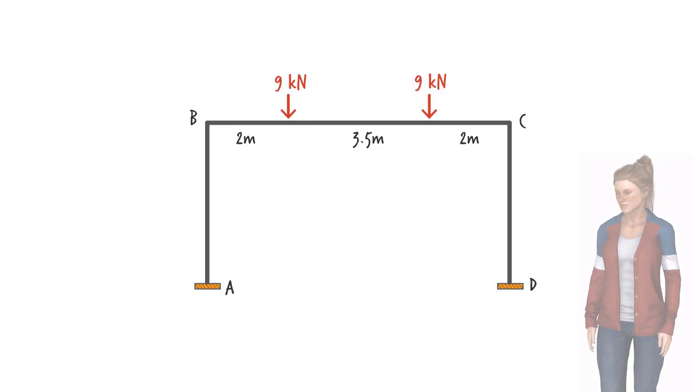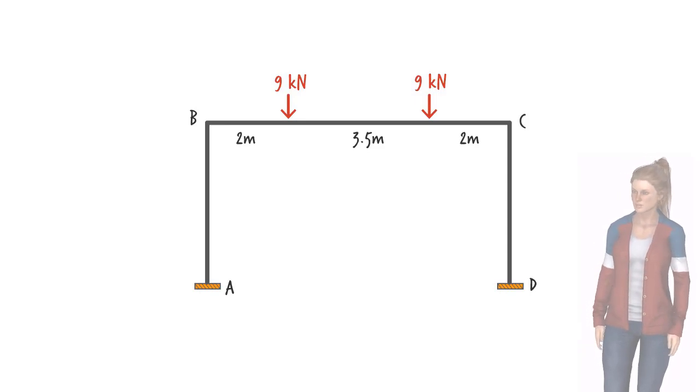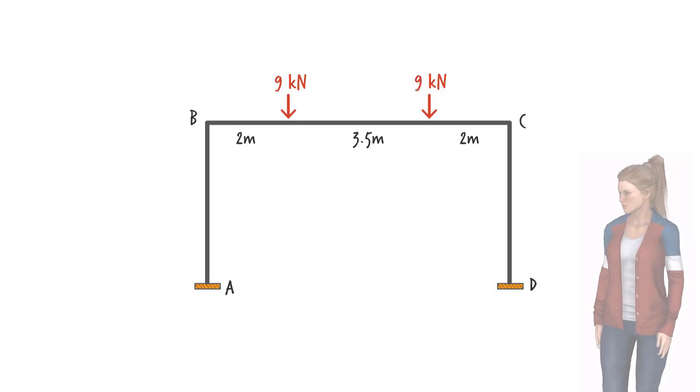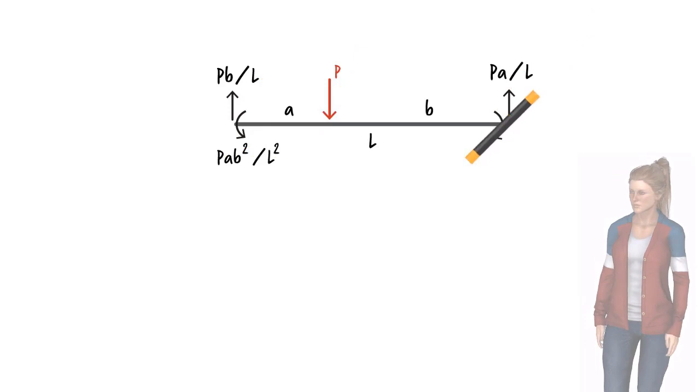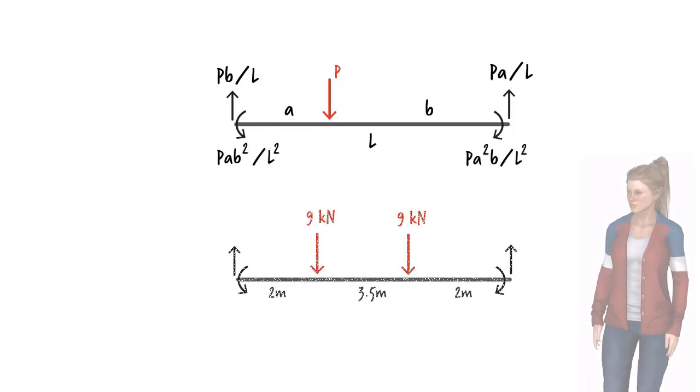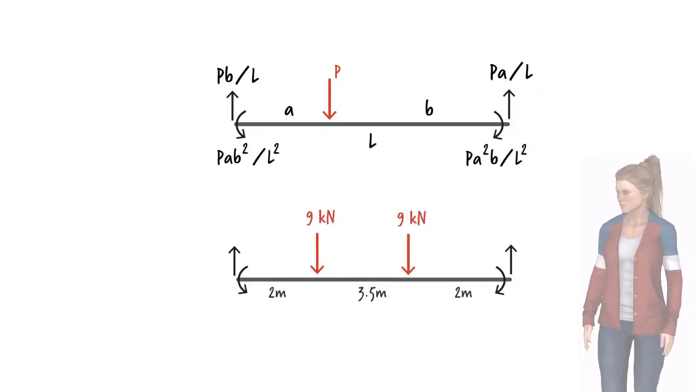To do so, we start by determining fixed-end forces due to the applied loads. For a beam subjected to a single concentrated load, the fixed-end forces are calculated. However, here we have two such loads, so let's use the principle of superposition to calculate the fixed-end forces.